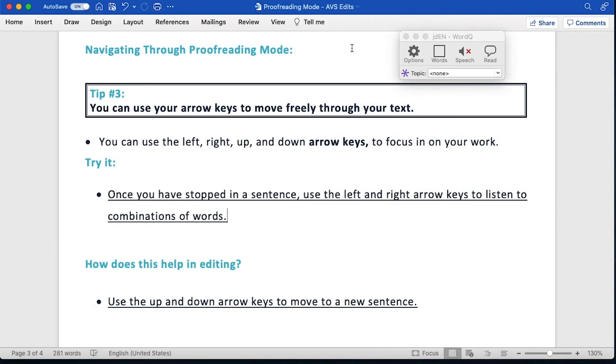Let's take a look at how we navigate through the proofreading mode now. Tip number three says that you can use your arrow keys to move freely through your text. You can use the left, right, up, and down arrow keys to focus in on your work. Once you've stopped in a sentence, use the left and right arrow keys to listen to combinations of words.